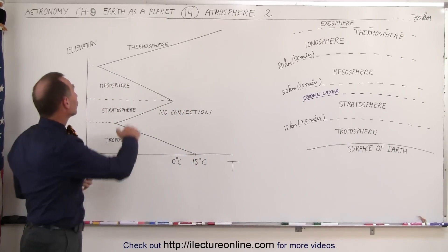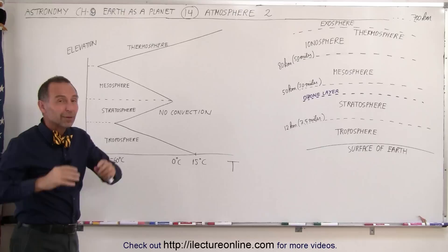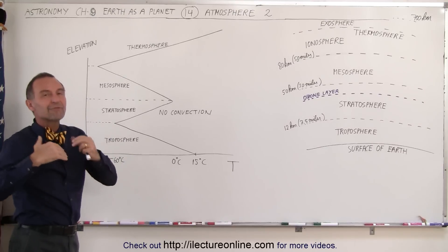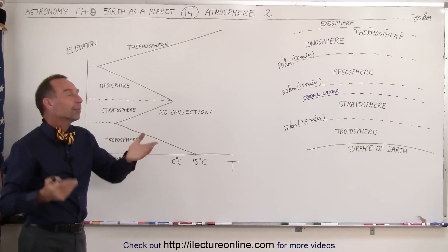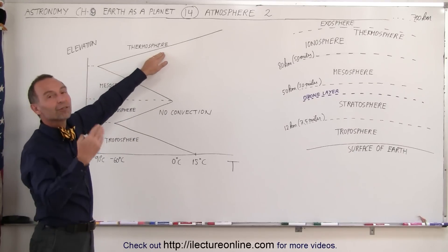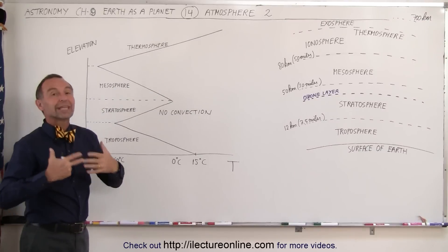At that point, the temperature begins to increase again, and they call this the thermosphere for a very good reason because that layer of the atmosphere gets to be very warm. Again, don't go up there expecting to be able to sunbathe because it is extremely far off the surface of the Earth. The air is extremely thin and there's almost no atmosphere to keep you warm.